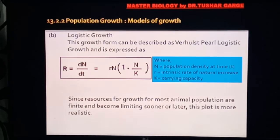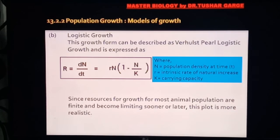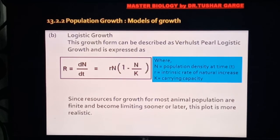The logistic growth formula is: dN/dt = rN × [(K − N) / K], where N is population density at time t, r is the intrinsic rate of natural increase (b − d), and K is carrying capacity.